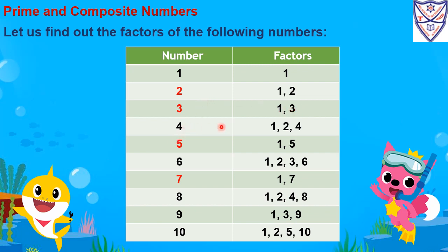For 4: 1×4=4, 2×2=4, 4×1=4. So 1, 2, and 4 are the factors of 4. For 5: 1×5=5 and 5×1=5. So 1 and 5 are the factors of 5.